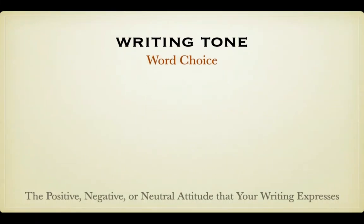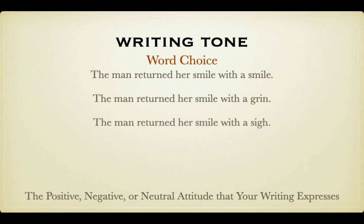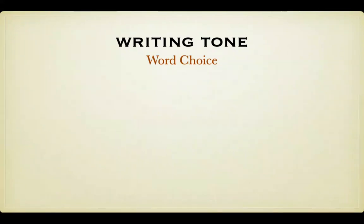The first way to communicate tone is through word choice. All words have positive, negative, or neutral feelings attached to them. Consider the following three examples: 'The man returned her smile with a smile.' 'The man returned her smile with a grin.' 'The man returned her smile with a sigh.' Each of the ending words — smile, grin, sigh — produces a slightly different tone than the other. As you write, you'll want to carefully select words that will accurately reflect the tone you want to communicate. Be careful if you decide to use words that communicate extremely positive or negative feelings, as this could make your audience believe that you're a biased or overly emotional author.